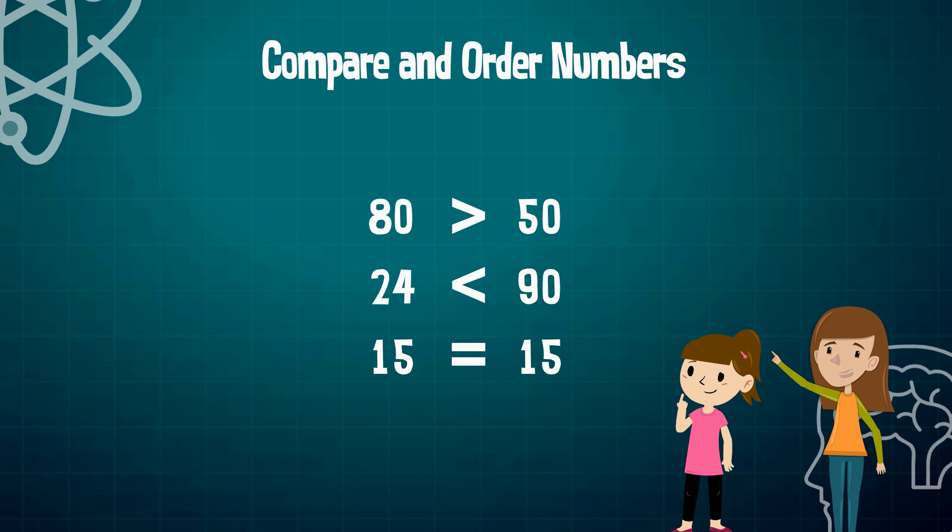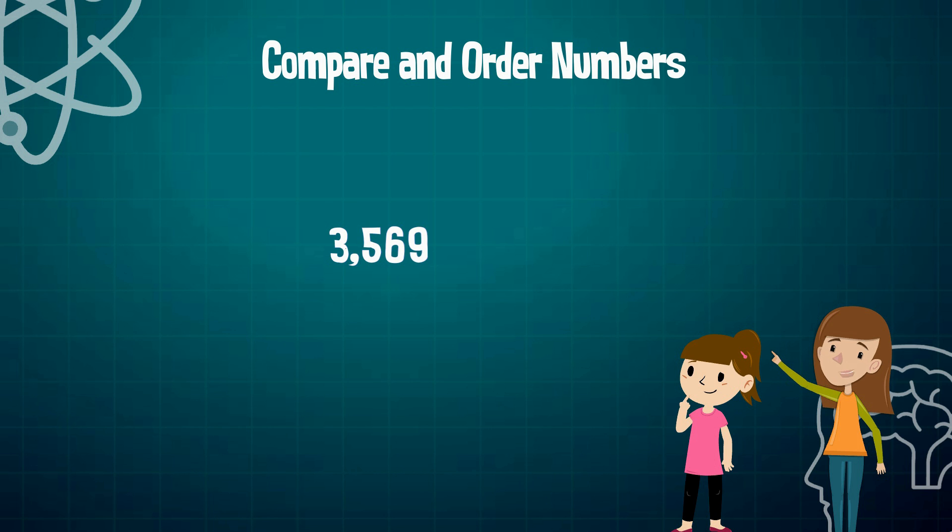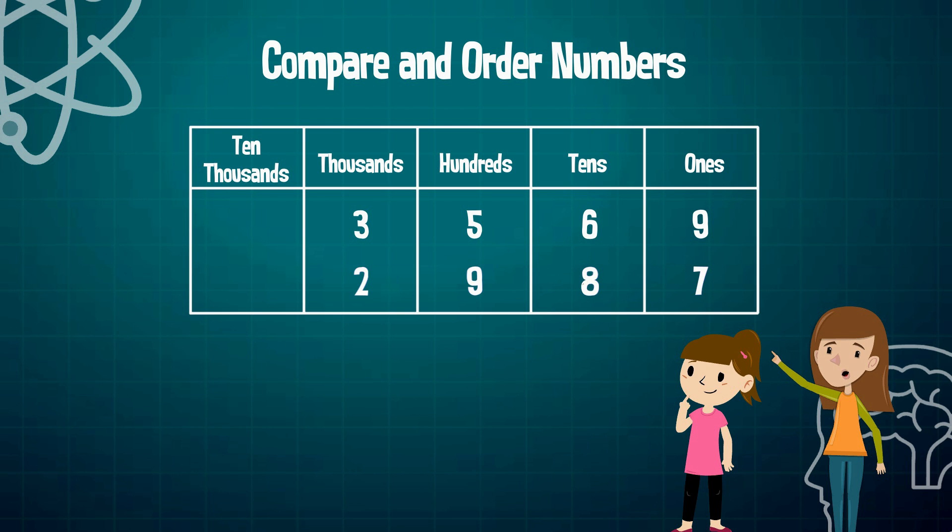When we compare numbers that have multiple digits, for example, 3569 to 2987, we need to look at the digit that has the greatest place value in each number. To help us with this, let's put both numbers in a place value chart. Now that we have organized both numbers in a place value chart, which digit in 3569 has the greatest value?